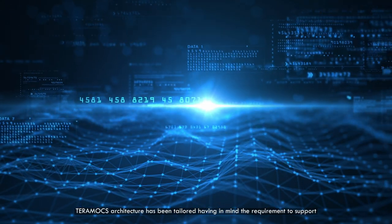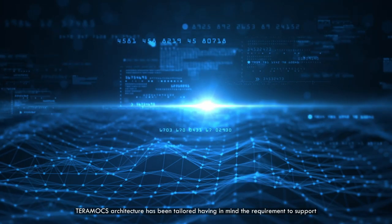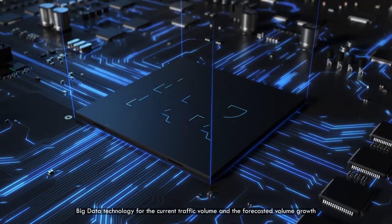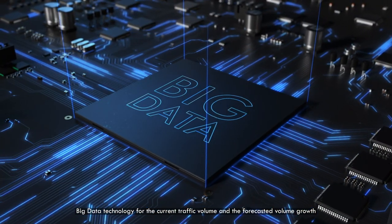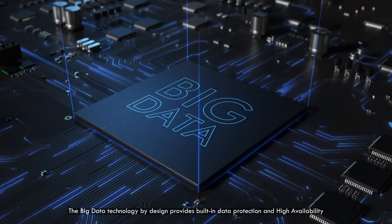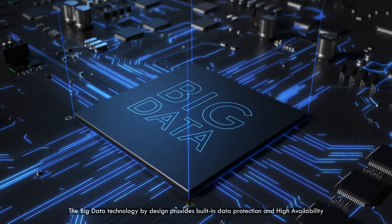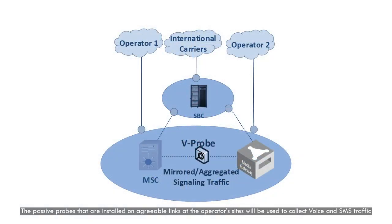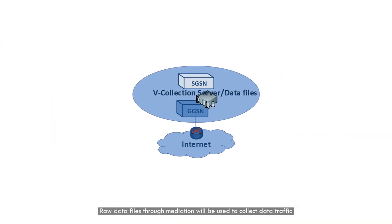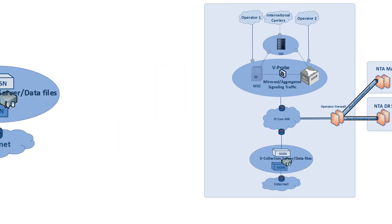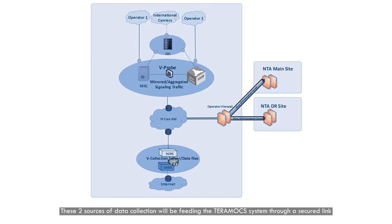Terramox architecture has been tailored having in mind the requirement to support Big Data Technology for the current traffic volume and the forecasted volume growth. The Big Data Technology by design provides built-in data protection and high availability. Passive probes installed on agreeable links at the operator's sites will be used to collect voice and SMS traffic, while raw data files through mediation will be used to collect data traffic. These two sources of data collection will be feeding the Terramox system through a secured link.